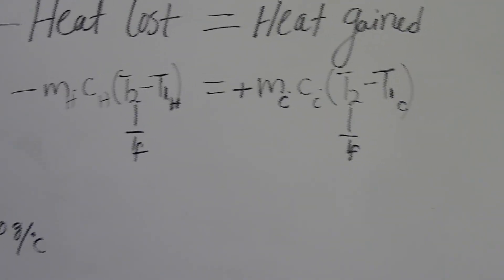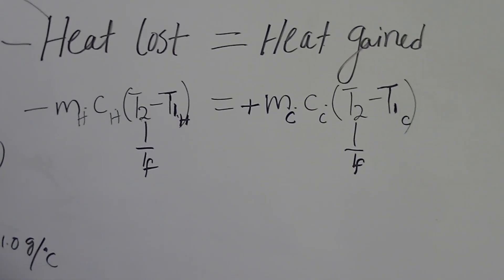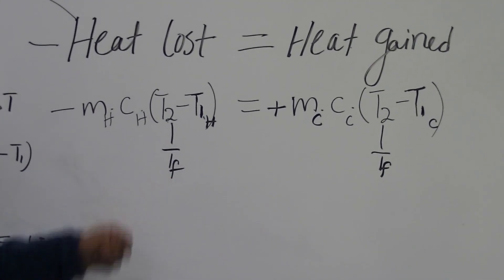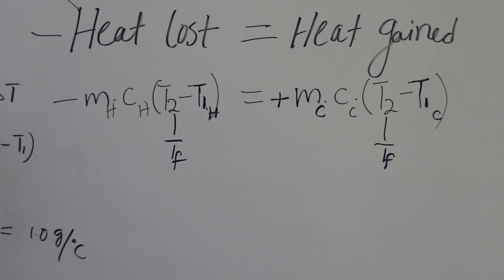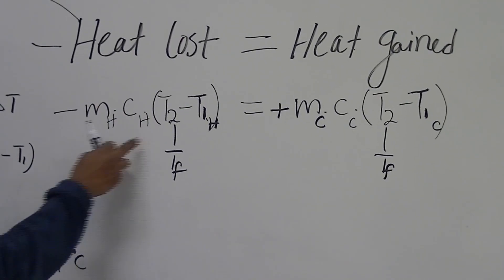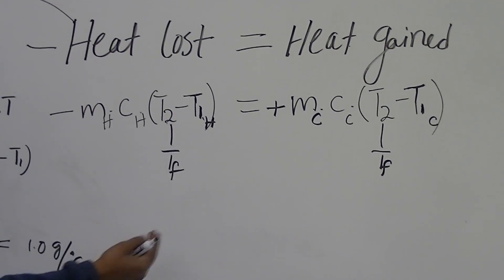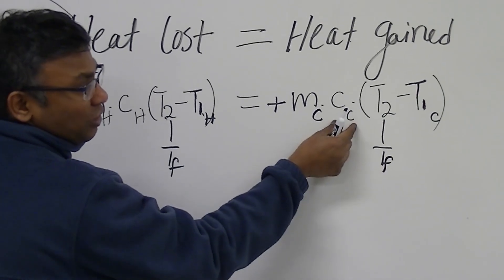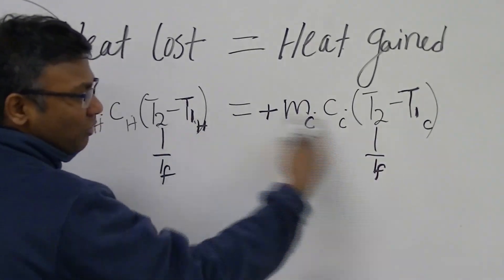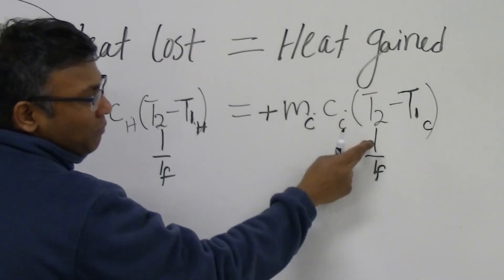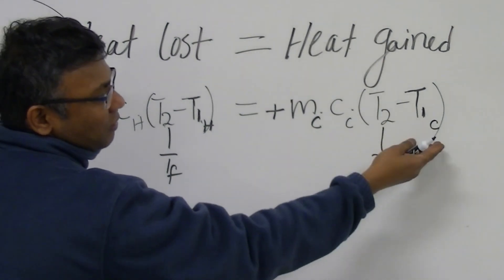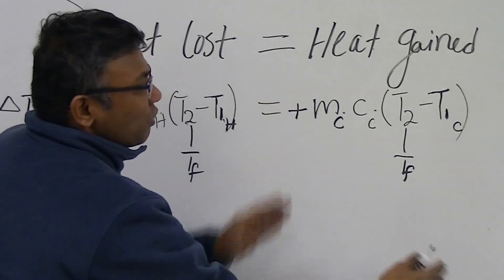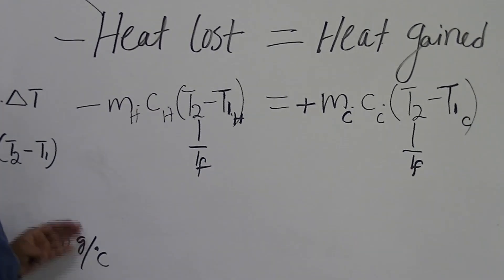Once you plug in all these numbers, you can calculate T-final using simple algebra and the distribution method. After you get T-final, you plug that value back into the equation to calculate the heat lost by the hot object. You also plug T-final back in for the cold water side — knowing its mass, specific heat of 1, T-final, and initial temperature of the cold water — and that gives you the heat gained by the cold water.